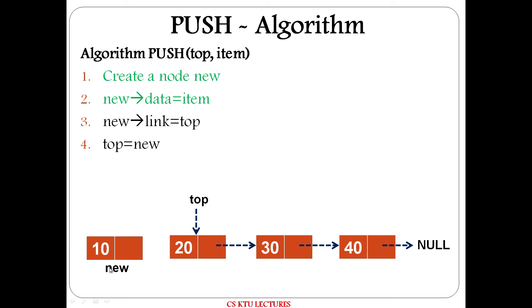This node is new. This list is at the beginning, insert the node. So new link equals top. New arrow link equals top. That means top equals new node. Now top is the new node. That is push algorithm.